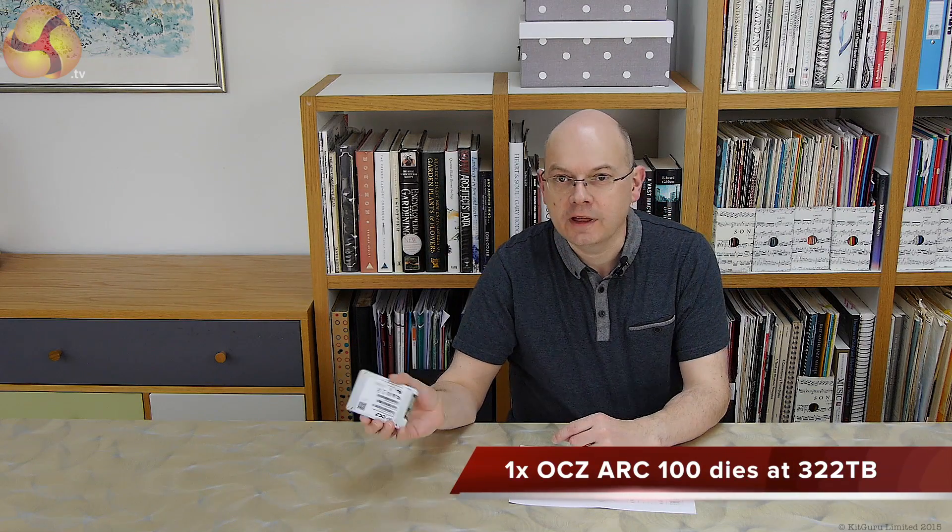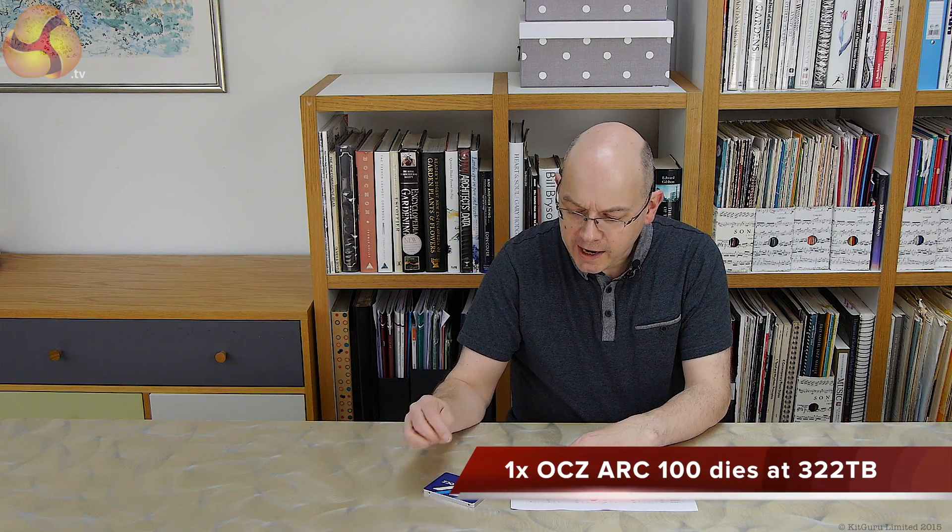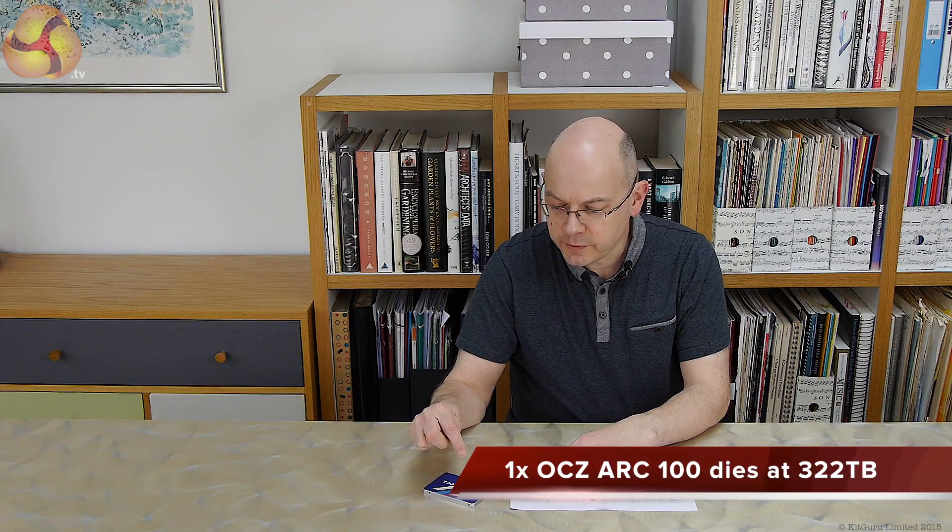As it happens it's Drive D, not that it makes a great deal of difference, and the last figure I had for it was 322TB. Now, the reason I say it looks like I've killed an SSD is that all six SSDs in the PC, that's the boot SSD plus five OCZ SSDs that I'm testing, they all appear in the BIOS correctly, however in Windows we're missing a drive.